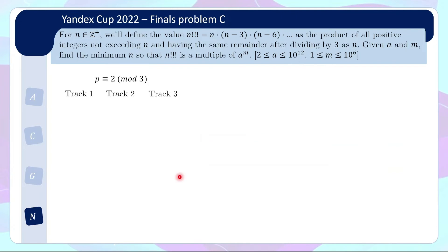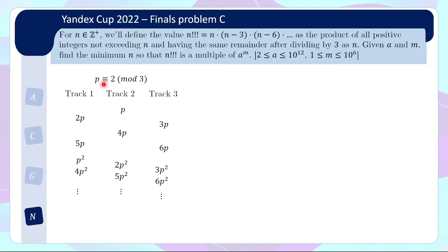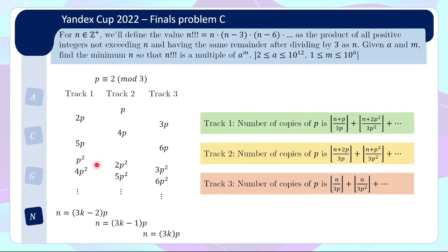For p congruent to 2 mod 3, the idea is very similar with a slight complication. The multiples of p are distributed across tracks — p in track 2, 2p in track 1, 3p in track 3, 4p in track 2, 5p in track 1, 6p in track 3, and so on. Meanwhile, p² is congruent to 1 mod 3, so p² ends up appearing in track 1 instead. When binary searching on track 1, the multiples of p use the 2 mod 3 coefficients, so you use floor((n + p) / (3p)), whereas for p² the coefficients are the 1 mod 3 ones, so you use floor((n + 2p²) / (3p²)). The coefficient in front of p, p², p³, ... in the numerator alternates between 1 and 2. For track 3 it remains straightforward — just dividing by 3p, 3p², and so on.